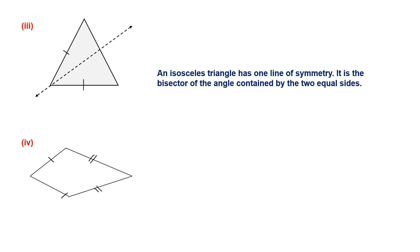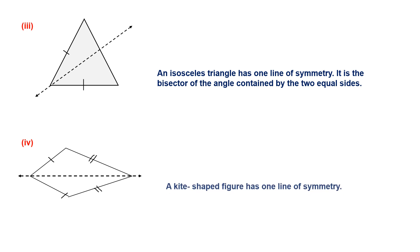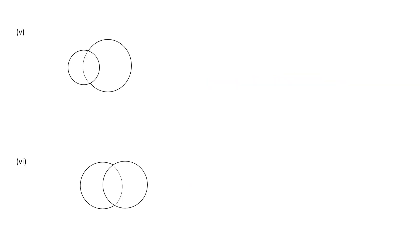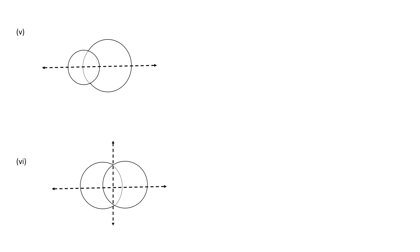Now look at the fourth figure, which is a kite-shaped figure. A kite has one line of symmetry. For question 5, the first shape has one line of symmetry as drawn. The second figure shows two circles of the same diameter and size, so it can have two lines of symmetry.